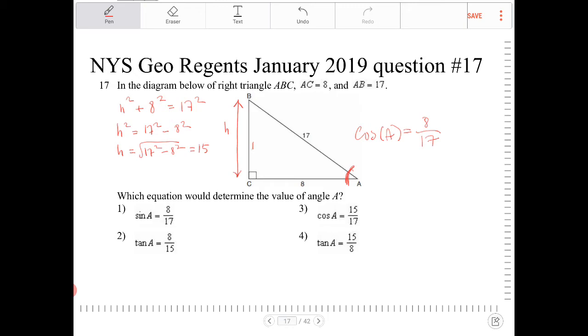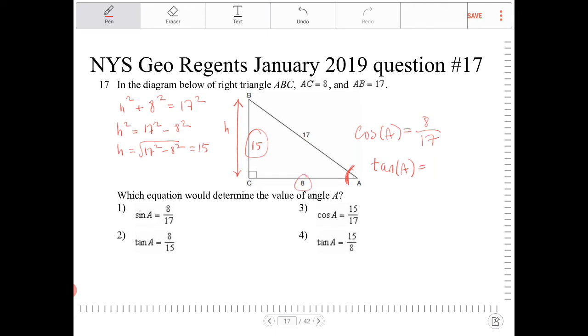So if this is 15 and I'm trying to solve for angle A, instead of using cosine, I can also use tangent of A. Because tangent of A, now that I know the opposite side and the adjacent side, I can use tangent. So I can say tangent of A equals 15 over 8. And do I have something like that here now? I absolutely do. I have option 4.